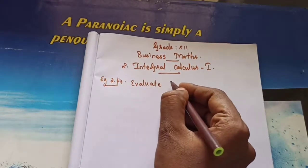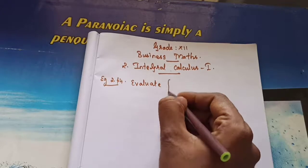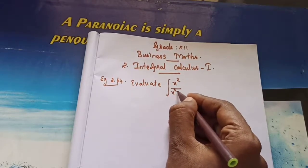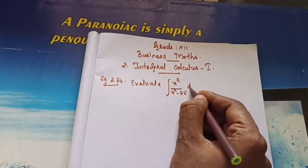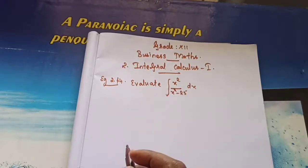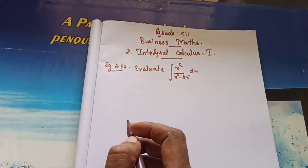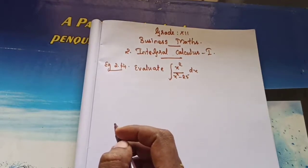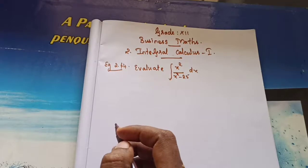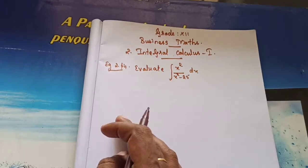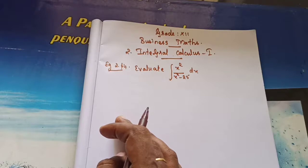Evaluate integral of x² divided by (x² minus 25) dx. So here what we can do — in the numerator we need to change it. We already know 7 formulas, and any one of the formulas we need to use. But here in the numerator only the x² term is there, so we need to change that.